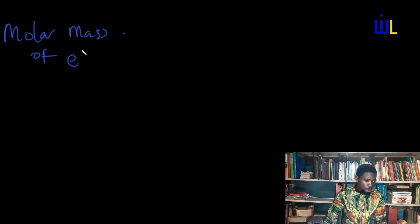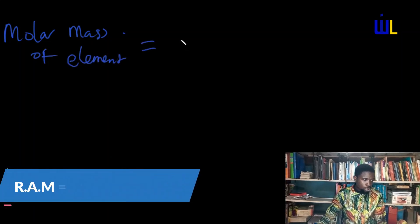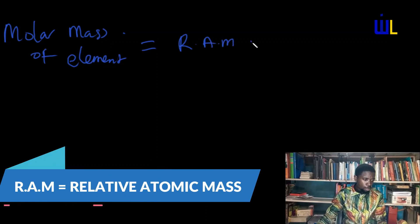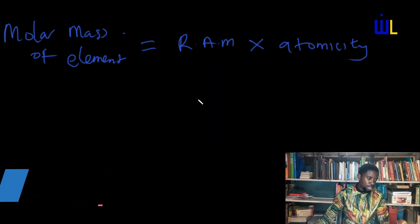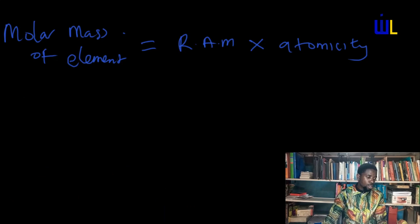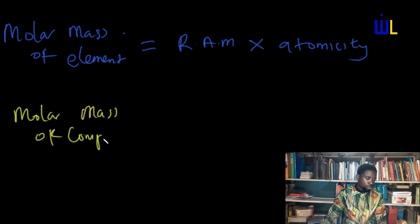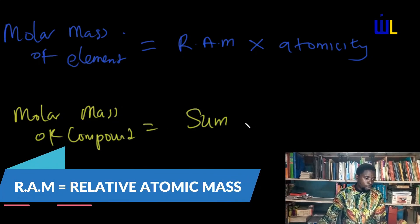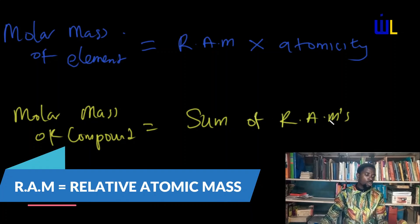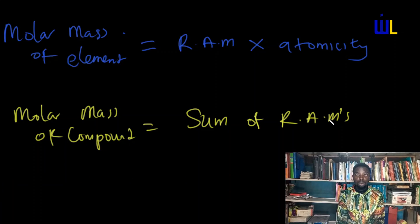Molar mass of elements equals relative atomic mass (RAM) multiplied by atomicity. And a simplified expression for molar mass of a compound is: molar mass of compound equals the sum of relative atomic masses. So once you are looking for the molar mass of an element, the molar mass is simply gotten by the relative atomic mass of that element multiplied by the atomicity of the element.